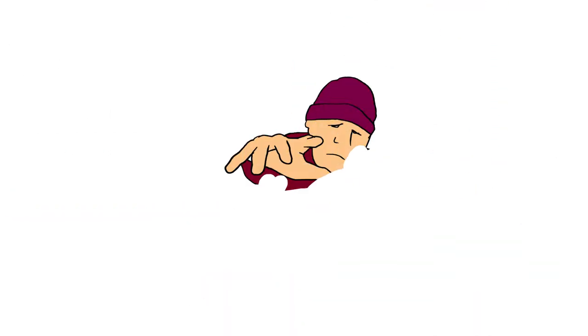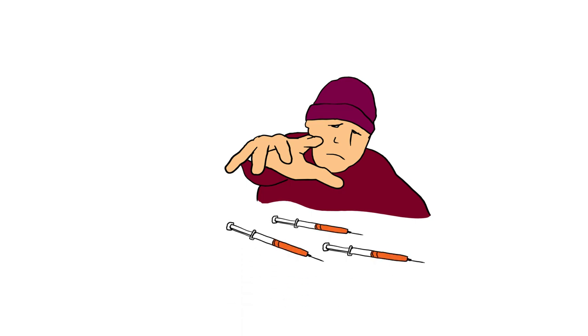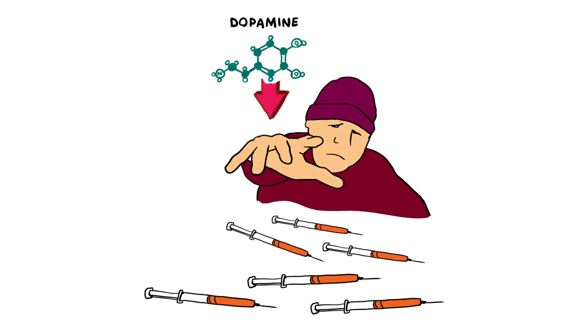When someone takes an opioid drug repeatedly, they can develop a tolerance to it as the body gets used to its interaction in the brain. Individuals may then take more of the drug to feel the desired effects. The brain will then stop functioning as it did before introduction of the opioid, causing levels of dopamine to drop when the drug wears off.